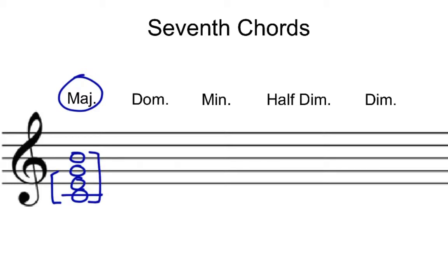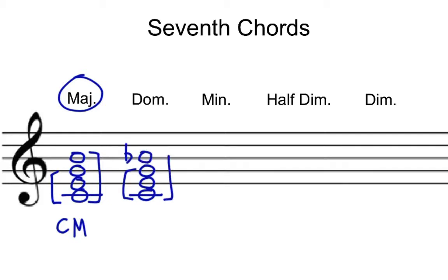Sometimes it's called a major major, but generally it's just referred to as a major triad — so a C major 7 chord. Let's build what's called a dominant 7. That's a major triad on the bottom but a minor 7 up top. There's our major triad, just like we had before, but instead of a B we're going to put a B flat. So with that minor 7 on top of a major triad, we call this a dominant 7.